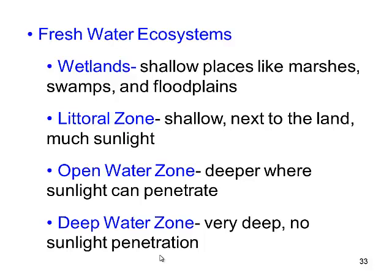Wetlands are shallow places — marshes, swamps, and floodplains. The littoral zone is shallow, next to the land, with lots of sunlight, lots of small organisms, and lots of plant life. Then we have the open water zones, deeper, where sunlight can still penetrate. Then we have deep water zones where, just like the ocean, sun can only go so far.